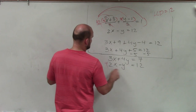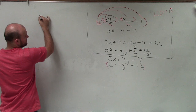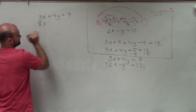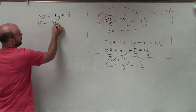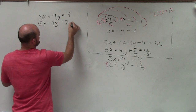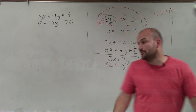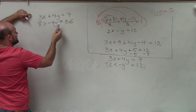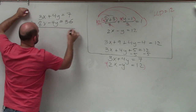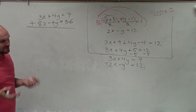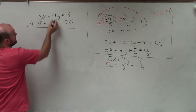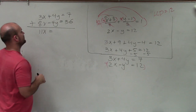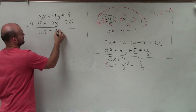So I'll multiply the bottom equation by 4. When I do that, the top equation remains the same: 3x plus 4y equals 7, and the bottom equation now becomes 8x minus 4y equals 36. The process of elimination is: once you have two terms whose coefficients are exactly the same — one positive, one negative — you can just add the two equations up. By adding them, that eliminates the y variable, so therefore this gives me 11x equals 7 plus 36, which is going to be 43.